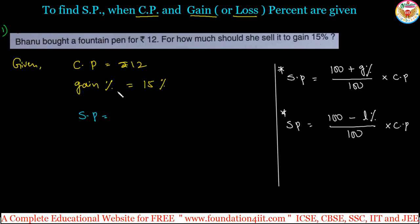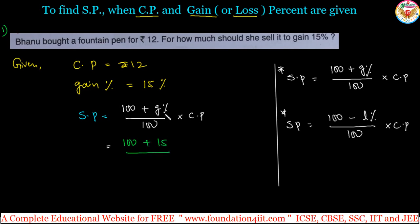In this problem, CP and gain percentage are given, so we use the first formula. Selling price = (100 + gain percentage) / 100 × CP. Substituting the values: gain percentage is 15, so it is (100 + 15) / 100 × CP, and cost price is 12. That gives us 115 / 100 × 12.